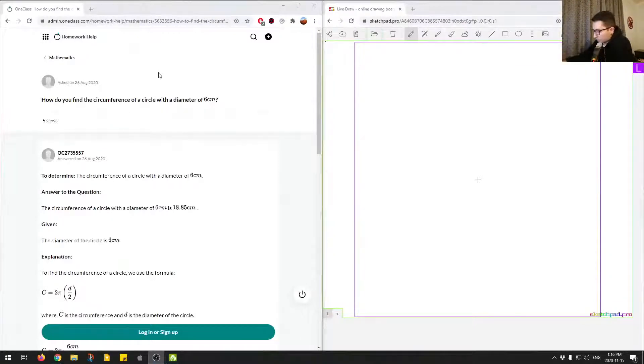Okay, so this is the first question, question number one. Here we're asked, how do you find the circumference of a circle with a diameter of 6 centimeters? So we have some circle and it has a diameter of 6 centimeters.